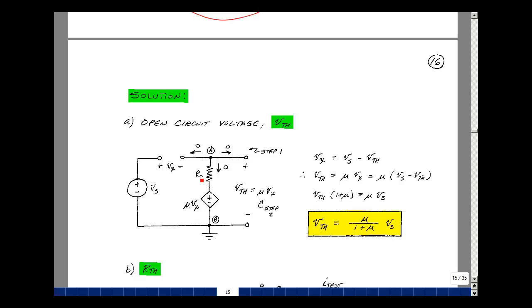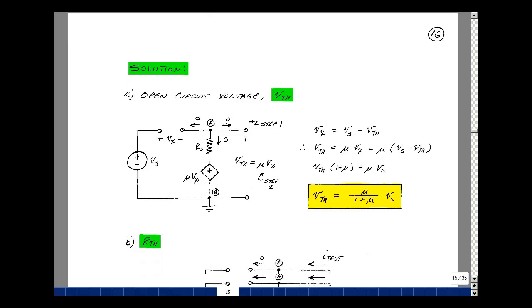We're considering that we know the resistance value, we know the input voltage, and we know our controlled source gain constant of mu. So I can then find the Thevenin voltage in terms of these symbolically, or if I had values, I could plug the values in. Now let's find the Thevenin resistance.